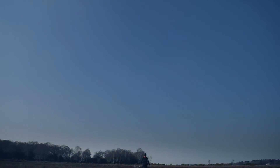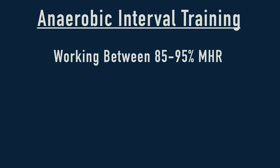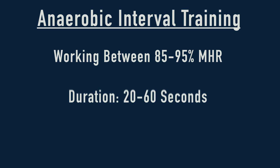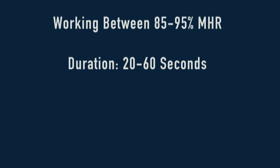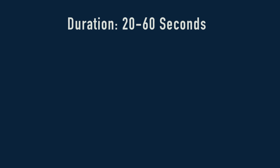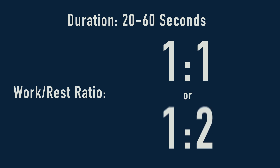Anaerobic interval training involves doing sets of high intensity training where the body is working between 85 to 95 percent of your maximum heart rate. Each routine should last between 20 to 60 seconds depending on ability and intensity, with roughly the same amount of time given for recovery. This gives a work-rest ratio of 1:1 or 1:2.